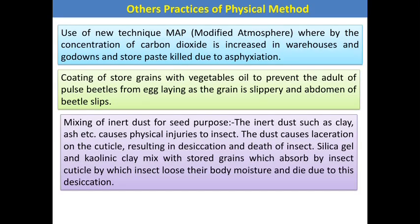There are also some other practices we can use in physical control to attract different pest populations. A new technique is the modified atmosphere technique, in which the concentration of carbon dioxide is increased in warehouses and godowns, and stored pests are killed due to asphyxiation — meaning removal of air. This creates anaerobic conditions in the godowns, which helps reduce the pest population.